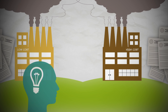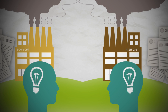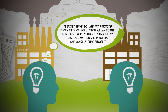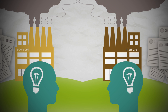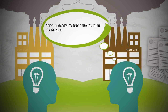By allowing the permits to be bought and sold, the profit-seeking self-interest of power plant owners is harnessed for the social good. The owner of the power plant with the low cost of reducing pollution thinks: I don't have to use my permits. I can reduce pollution at my plant for less money than I can get by selling my unused permits and make a tidy profit. Meanwhile, the power plant owner with the high costs wants to buy permits and is willing to pay a lot, because it's cheaper to buy permits than reduce pollution at high cost.